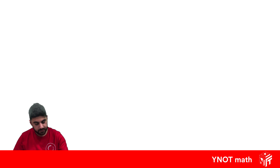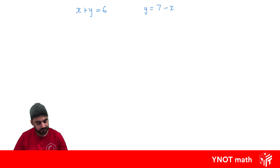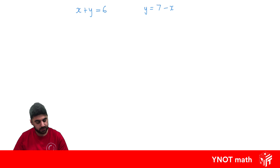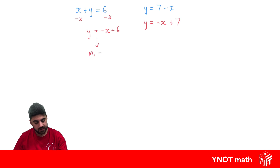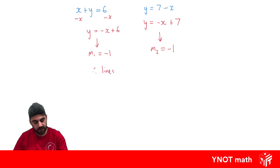What about another example? Let's look at x plus y equals 6 and y equals 7 minus x. The second one is in y equals mx plus c form — the x and the constant are just switched around — but the first one's not. So we rearrange it: subtracting x from both sides gives y equals minus x plus 6. We can also rewrite the second as y equals minus x plus 7. Now we can read off the gradients as the coefficients of x. This one is minus 1, and this one is also minus 1. The gradients are the same, so therefore these lines are parallel.